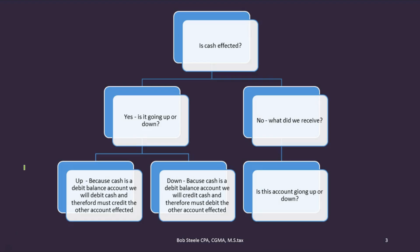We will still ask the same questions: is cash affected? If it is affected, is it going up or down and what will be the effect on cash? After doing that, we can then see what will happen to the other side of the transaction. Why do we do that? Because cash is going to be affected very often, and most people understand which way cash will be going and whether to debit or credit it before understanding other types of accounts. Then we can figure out the second type of account.